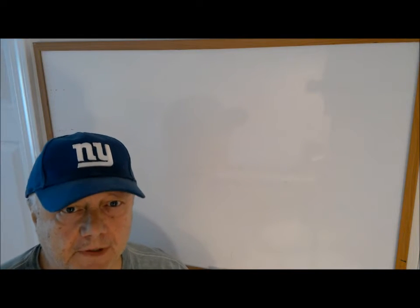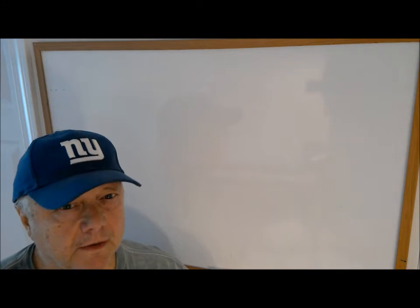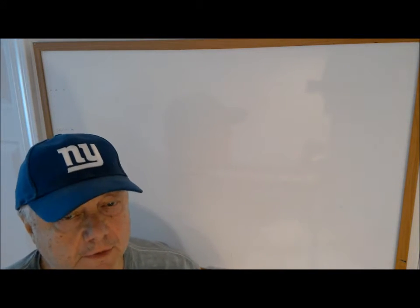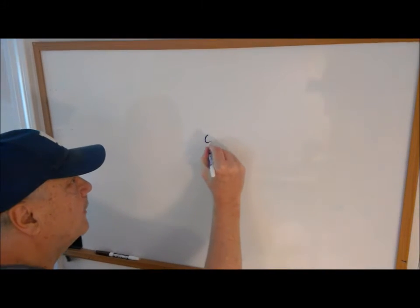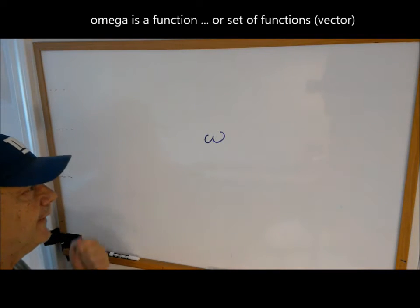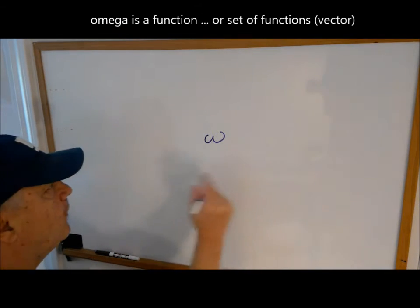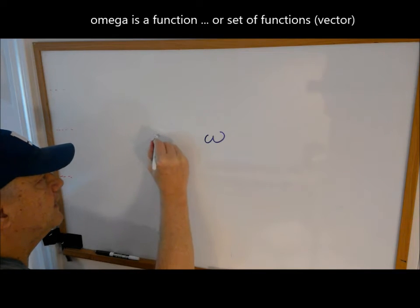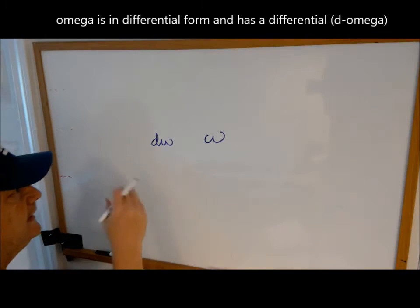This lecture is The Big Picture of Calculus, and it's motivated by a single equation. So we begin with an object omega, and typically this is a function or maybe a package of functions, and it's in differential form, which means it has a differential d omega.